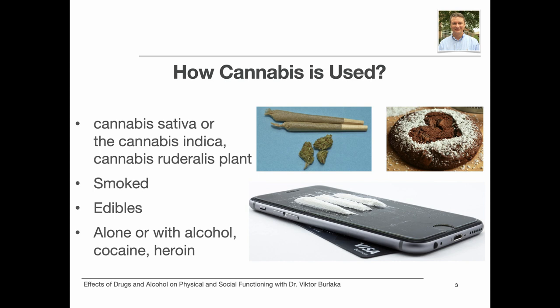Traditionally, cannabis use involved inhaling smoke either directly as a form of cigarette or cigar — nicknames include joint, blunt, roach, doobie — or through a filtration system such as a water pipe or bong. Vaping is another way to use cannabis and it has been linked with lung injury. The act of smoking cannabis has a number of nicknames as well: toking, cheeching, blowing, firing one up, going loco.